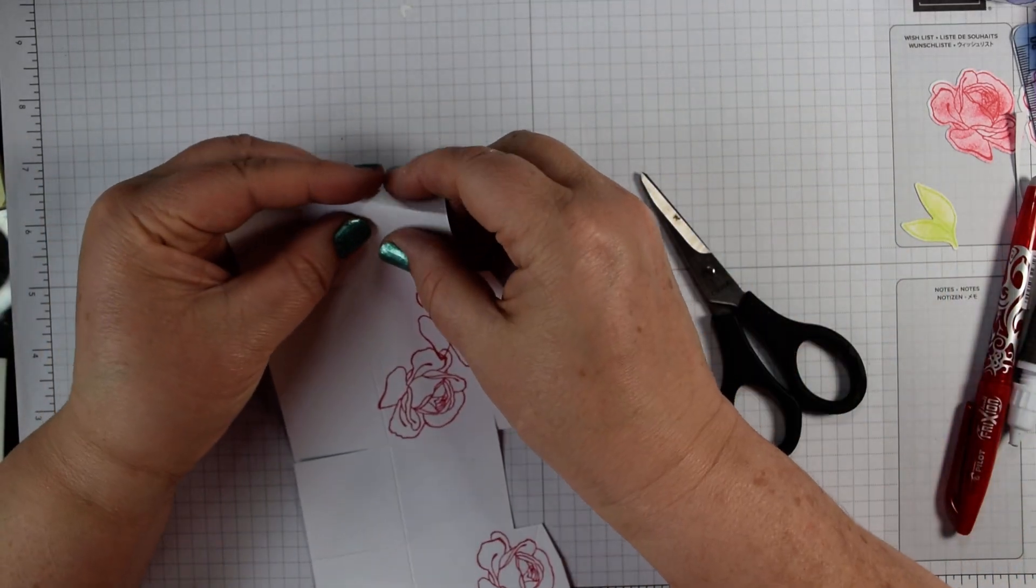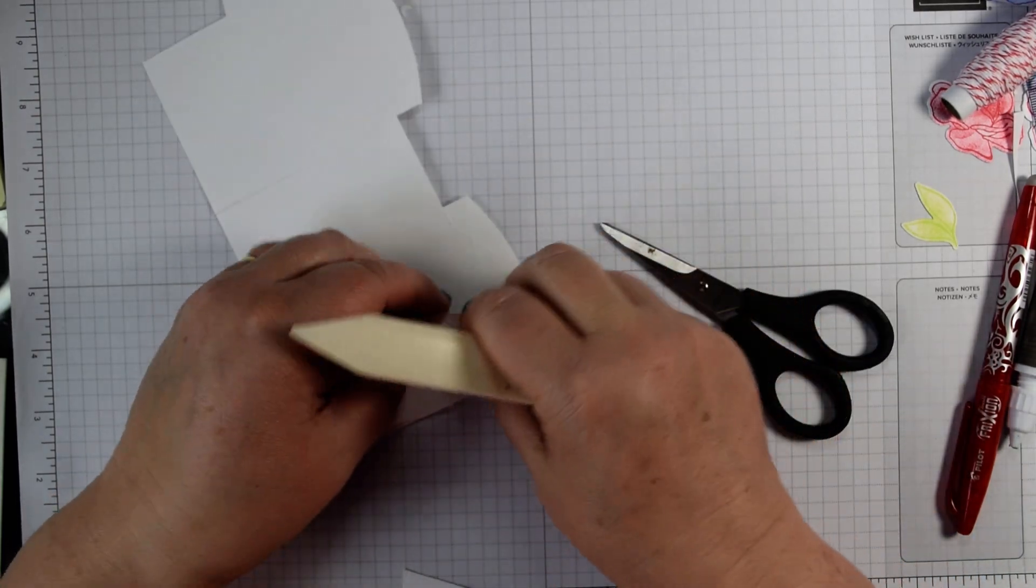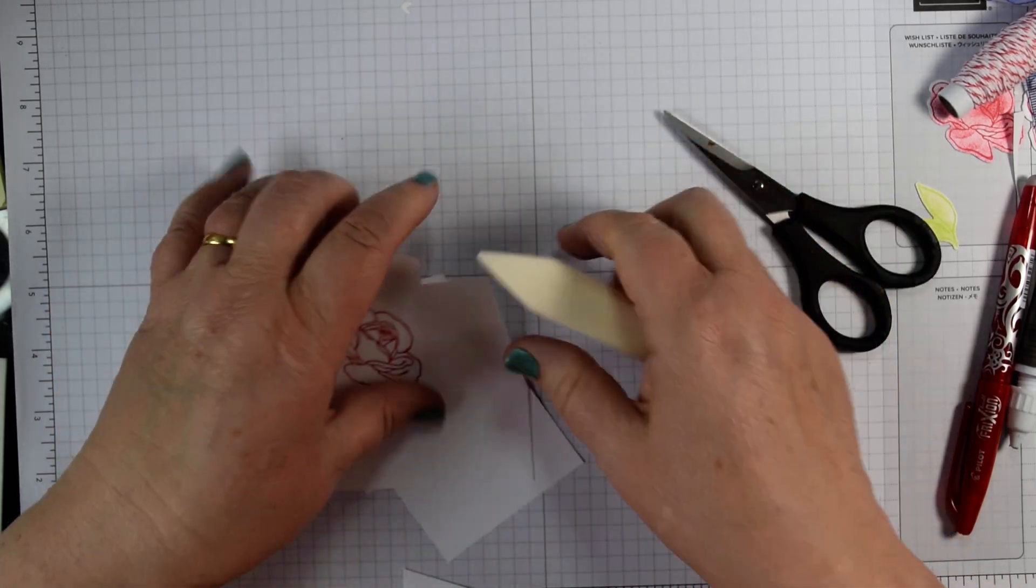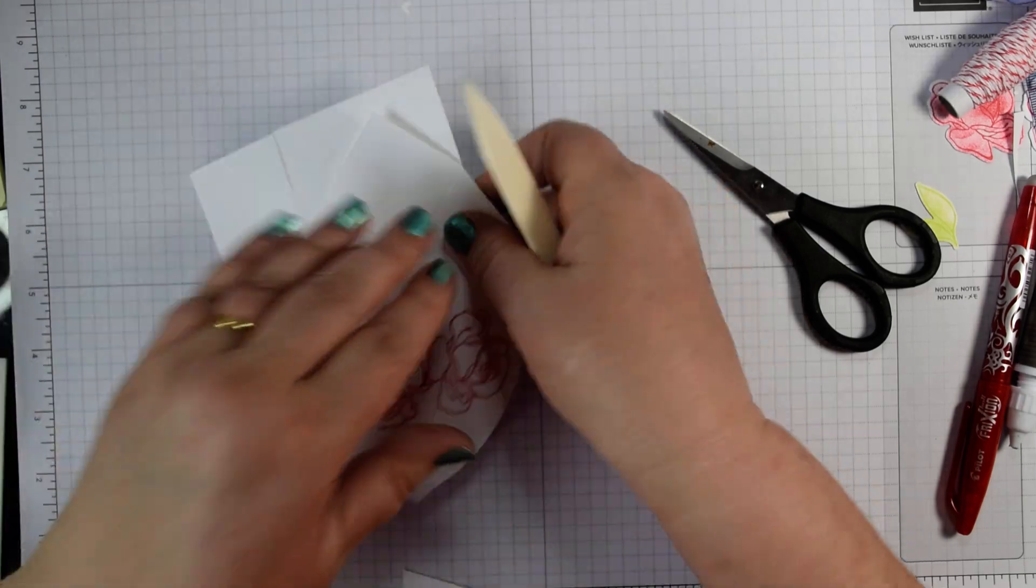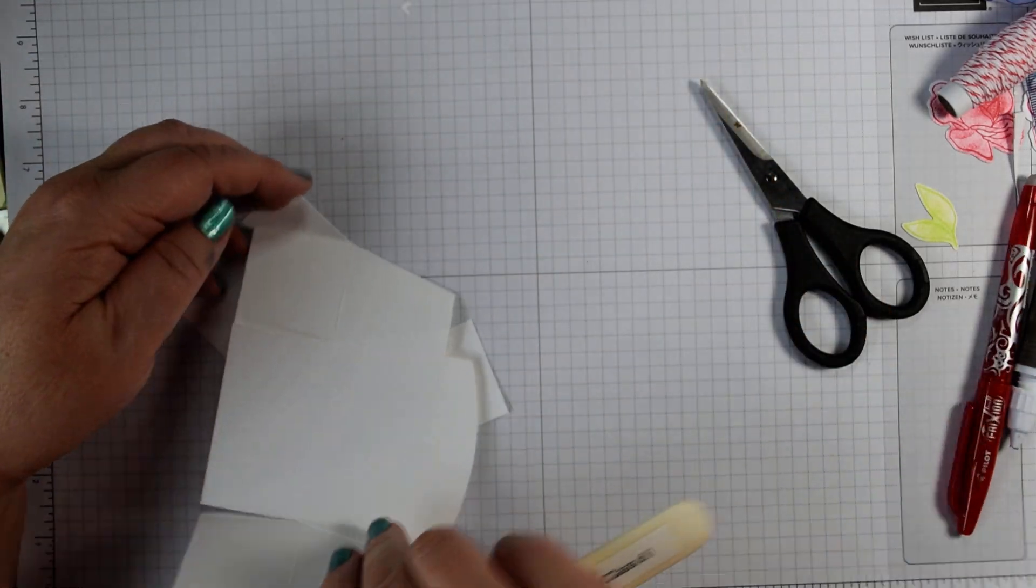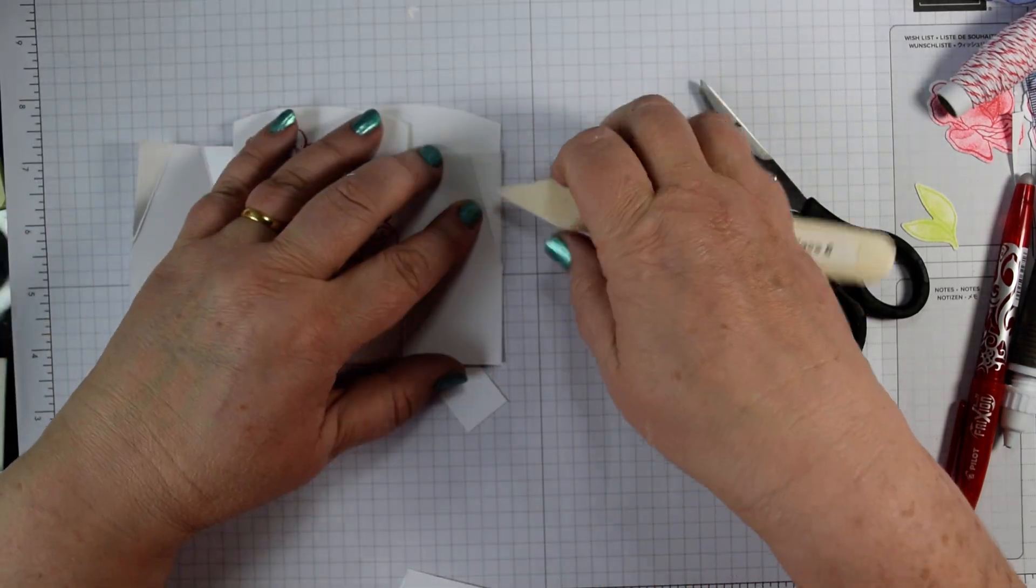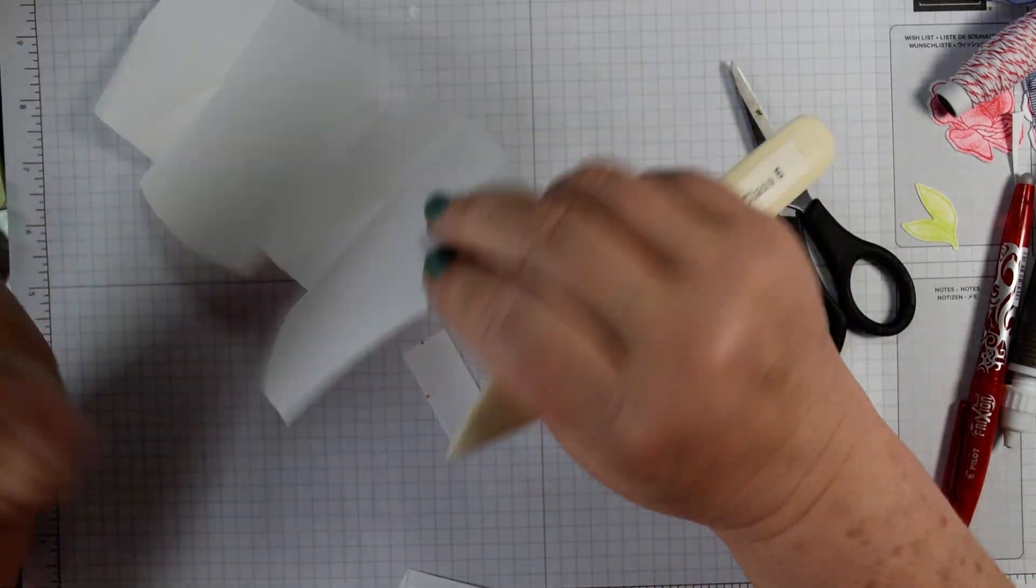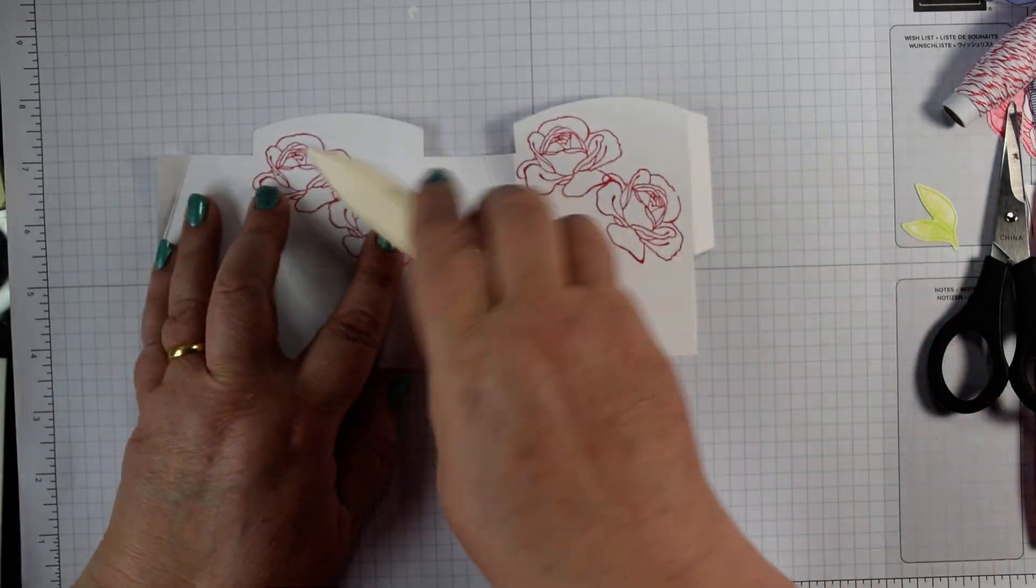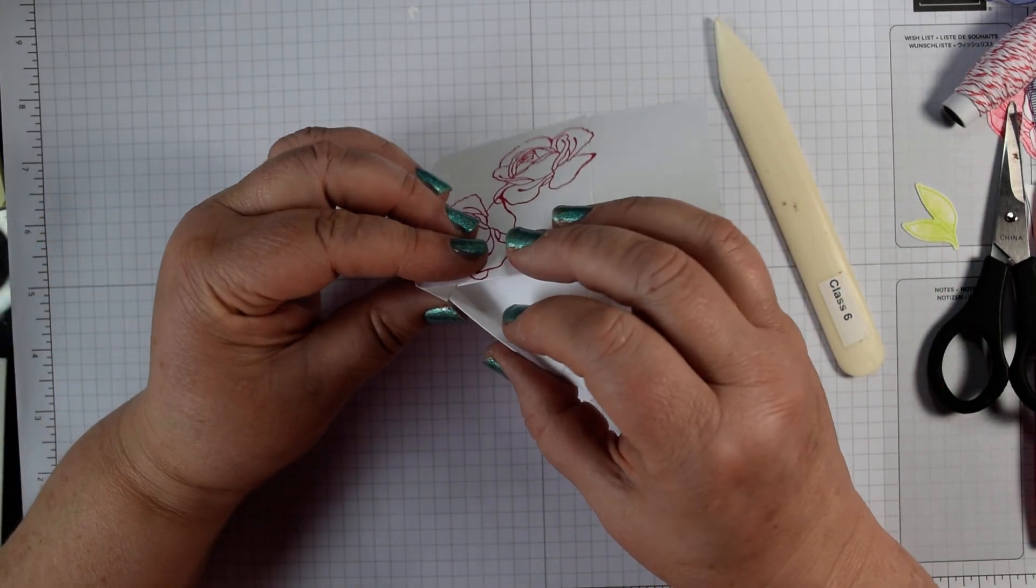On each of those, then we can reinforce our score lines, so grab your bone folder for this. It's a 3D project, so you really do want to make sure they're well scored. Once you've done those diagonals in one direction, you want to fold them back on themselves because they're going to be going into our box. If I lay that out, you can see we've got a curve and a curve underneath. This bottom section is just to enable it when it closes to come together more easily.